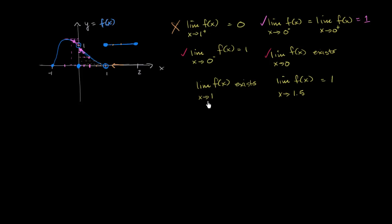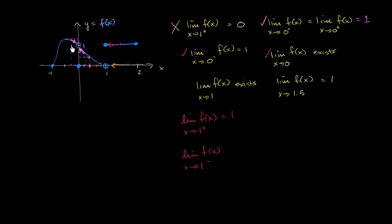Now: does the limit of f of x as x approaches 1 exist? Approaching from the positive direction, the limit is 1. Approaching from the negative direction, f of x gets closer and closer to 0, so that limit is 0. Since the right-hand limit (1) differs from the left-hand limit (0), the overall limit does not exist. This statement is not true.